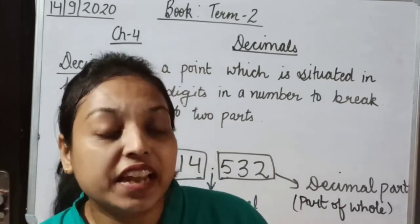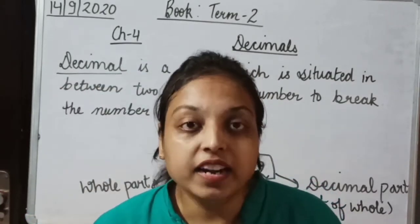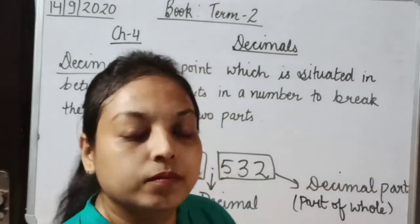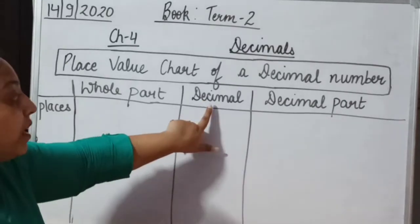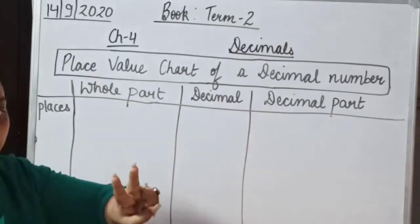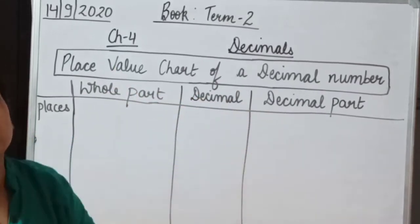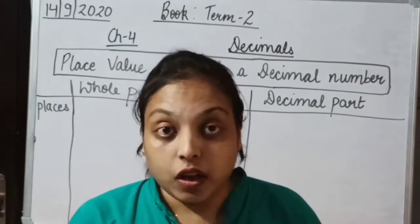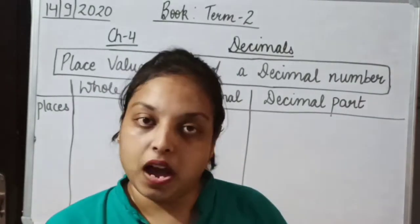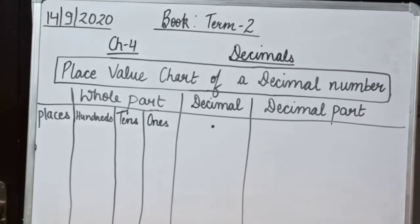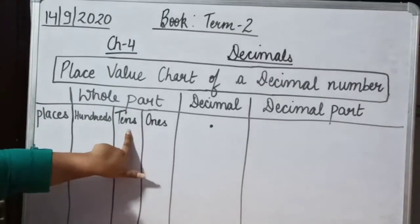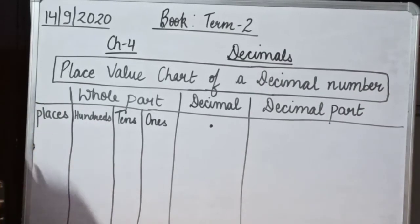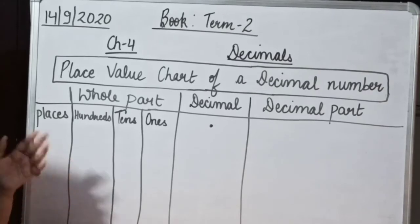We will learn this interlinked or interrelated part in other videos. Now we are moving forward to the place value chart in decimal numbers. A decimal breaks a number into two parts: the whole part and the decimal part. The whole part has places as ones, tens, hundreds, thousands, ten thousands, lakh, crore, ten crore, and so on.